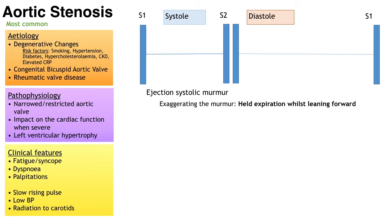On examination you might find a slow-rising pulse and low blood pressure. On auscultation you will hear an ejection systolic murmur — also described as a crescendo-decrescendo pattern peaking in mid-systole — heard best at the right upper sternal border. Using the bell of the stethoscope, listen over the carotid pulses to check for radiation. Here is a sound clip of aortic stenosis.